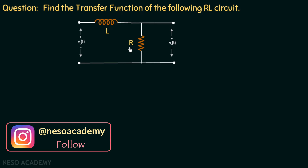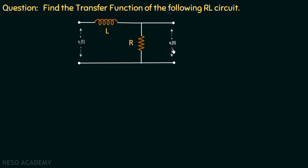We know that the transfer function is equal to the ratio of the Laplace transform of the output to the Laplace transform of the input. Moving on to the solution, the Laplace transform of V(t) is V(s), the Laplace transform of Vout(t) is Vout(s), and the Laplace transform of resistor R is simply R. However, we do not yet know the Laplace transform for an inductor.